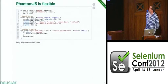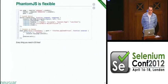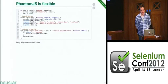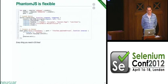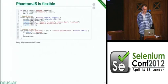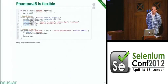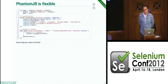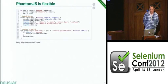This is just to show that in something like 20 lines of code you are spinning up a server and at the same time opening a real WebKit web page and connecting to it. It's a very simple scenario but it represents the kind of flexibility that you can have from PhantomJS.